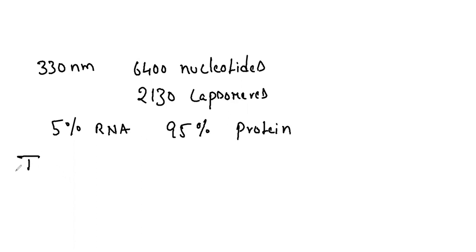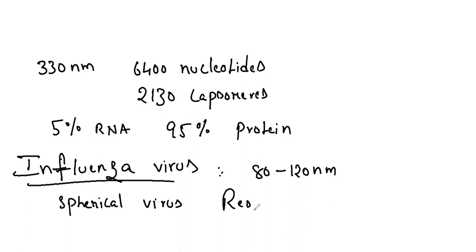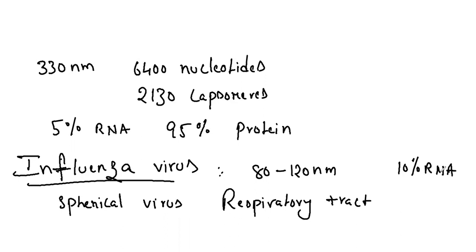The influenza virus is also single-stranded RNA, spherical in shape, measuring 82–120 nanometers. It infects the respiratory tract and has helical symmetry, with 10% RNA and 90% protein. The virus can be killed at 65°C but is more active at low temperatures.